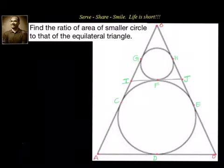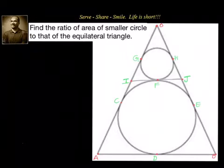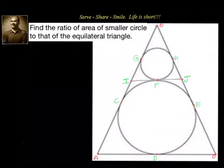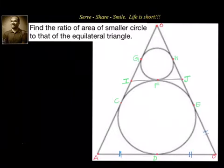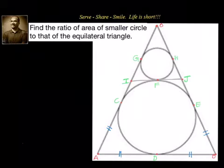The logic we want to use is that the length of tangents drawn from an external point to a circle are equal. We have been given that this is an equilateral triangle, so the total side is divided into two equal lengths. We know that OC = AC, OE = BE, and AD = DB.